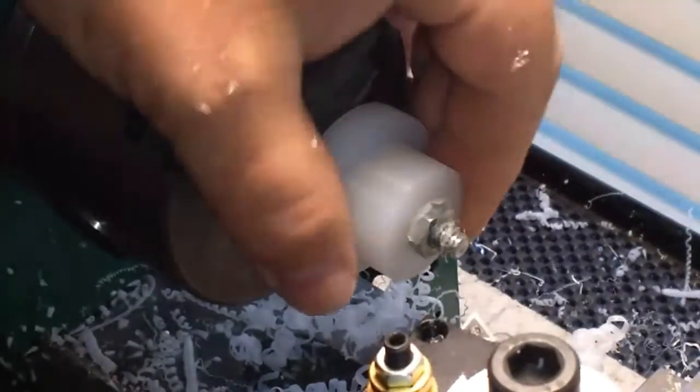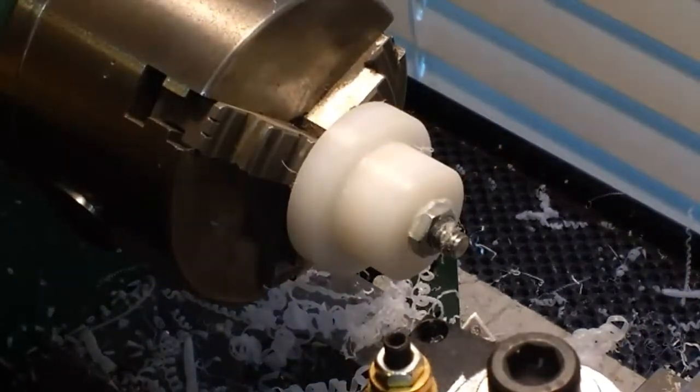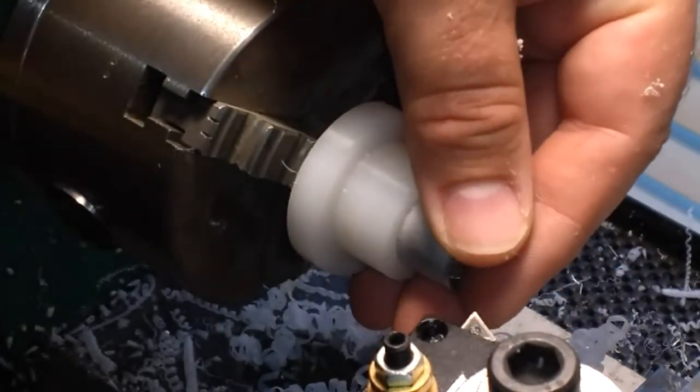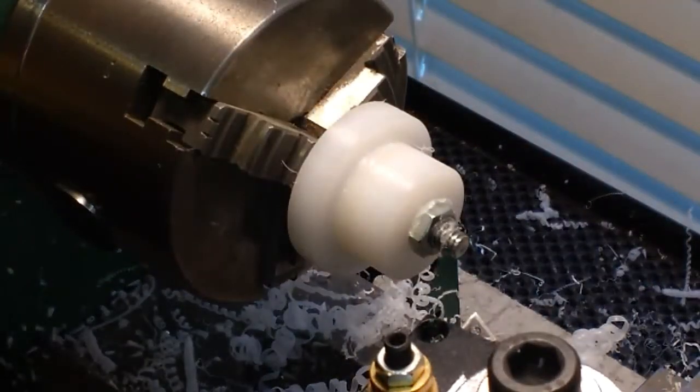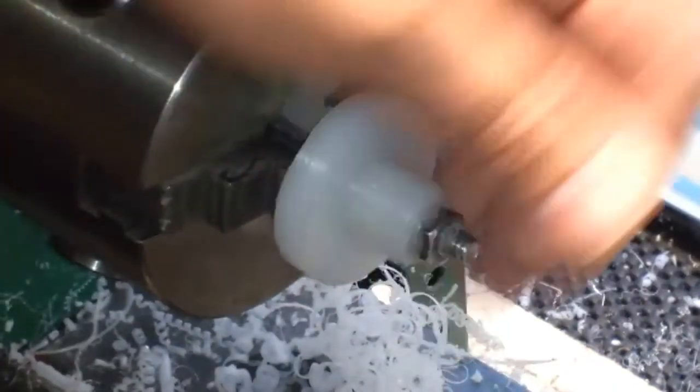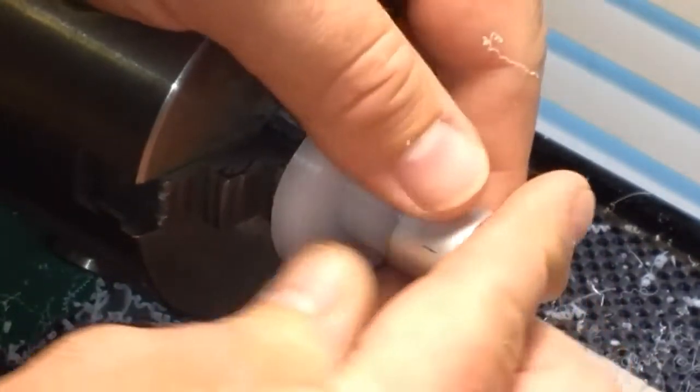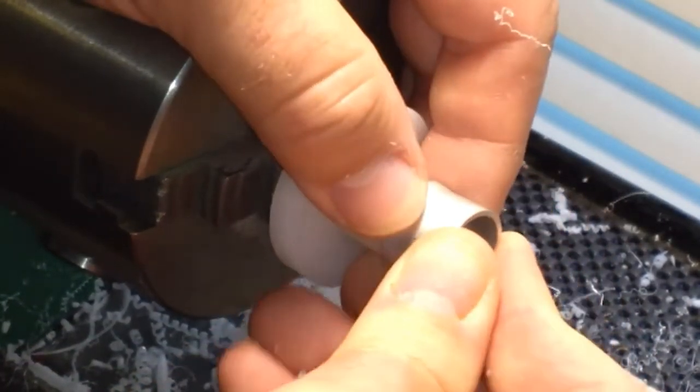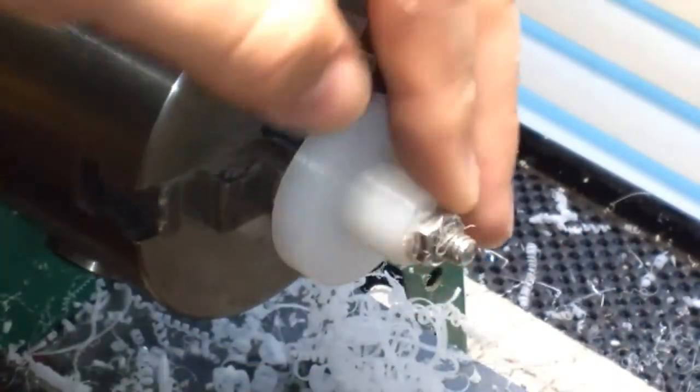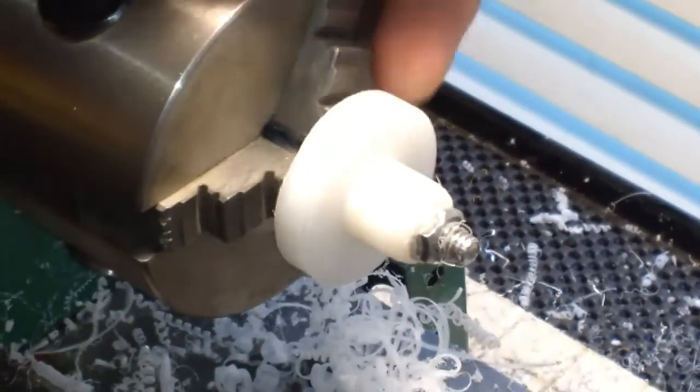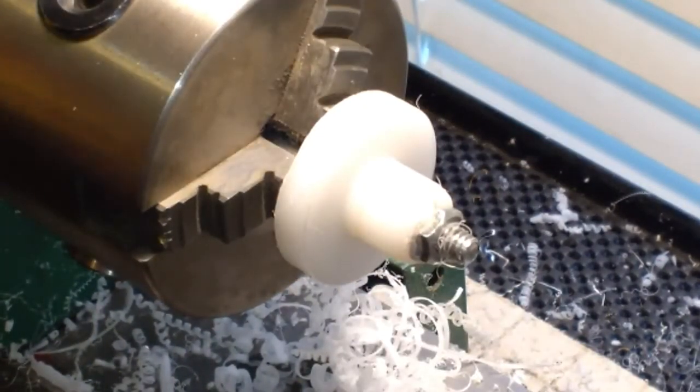So what I was doing here was I was turning down one end to where I could get it into a piece of metal that came off of an old crutch. And that's what I wanted the bushing to fit inside of. That aluminum tubing from the crutch is pretty heavy duty stuff. The crutches were rated at 300 pounds so it's pretty sturdy aluminum tubing.